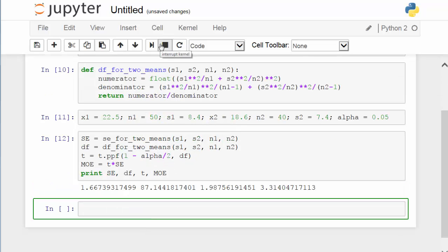Let's take a look. The SE is about 1.67. Degree of freedom is 87.14. If you are using the t distribution table to find the t value, then it is recommended that you use 87 instead of 88. But because we are calling the t distribution from scipy package, we can just plug in these decimal numbers. The resulting t value is 1.98756.